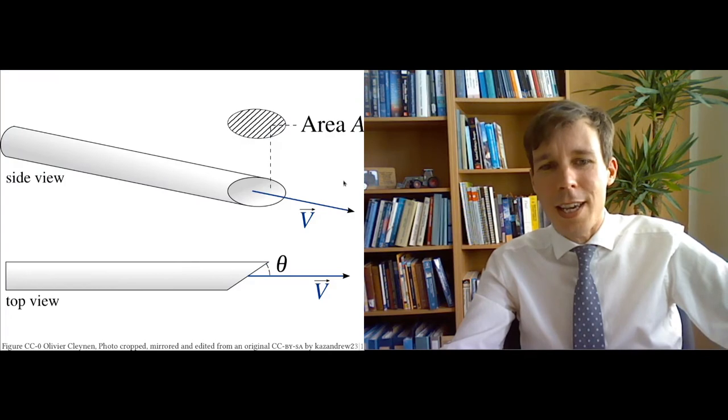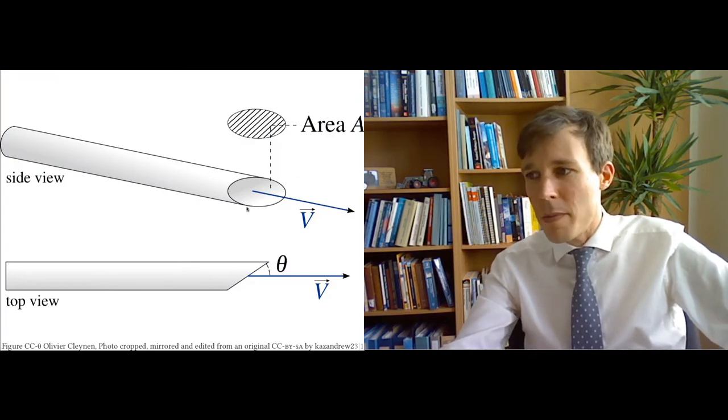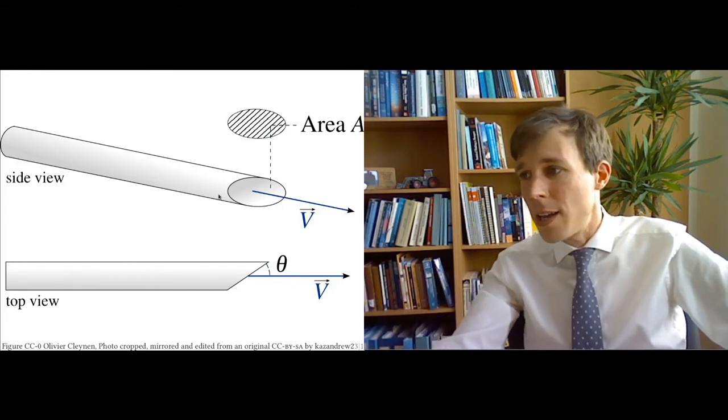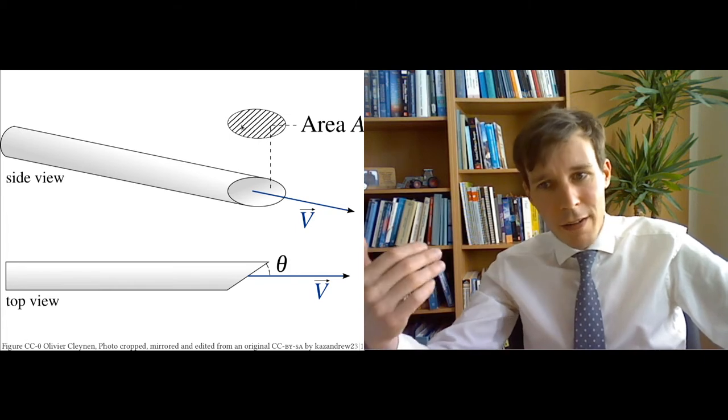So let's take a look at this on the diagram. What you have here is a pipe. This pipe is cut in a slanted way so that this area A here is an ellipse. It's not the area of a disk.